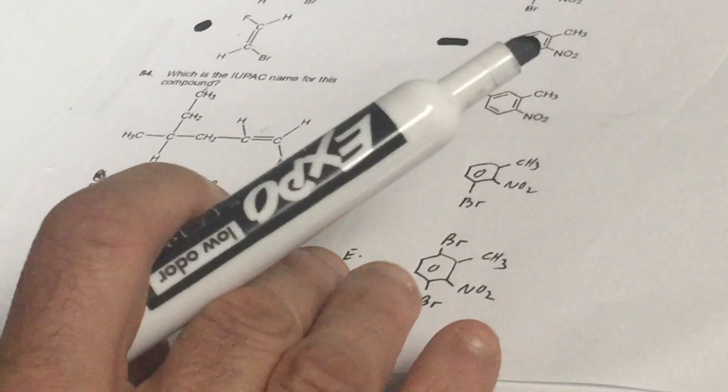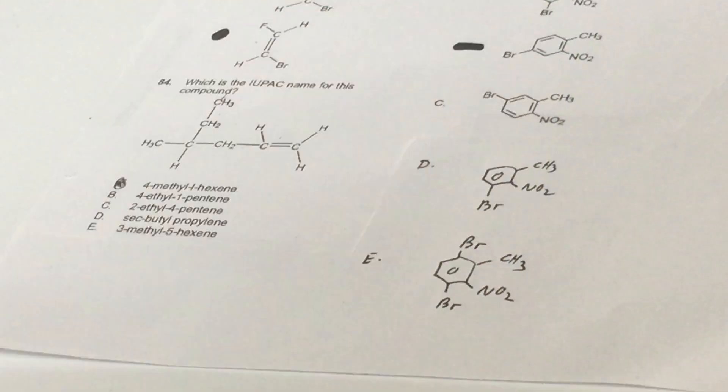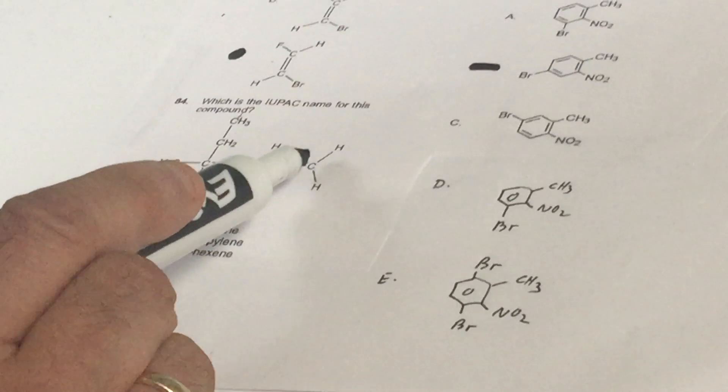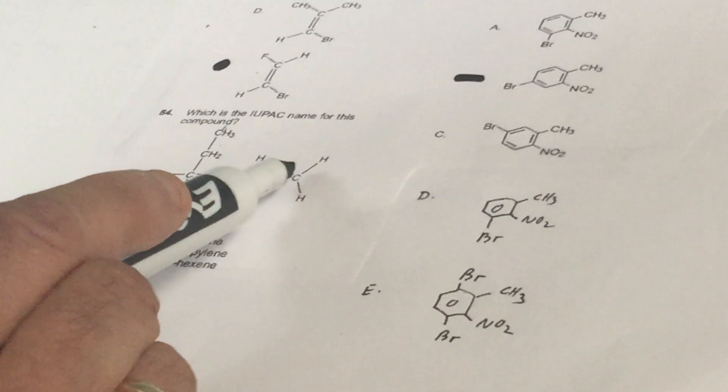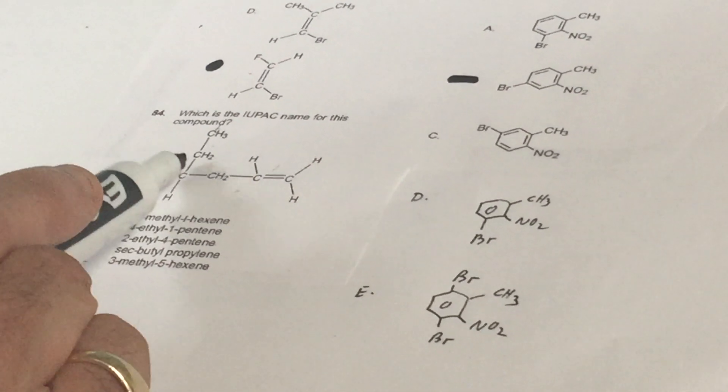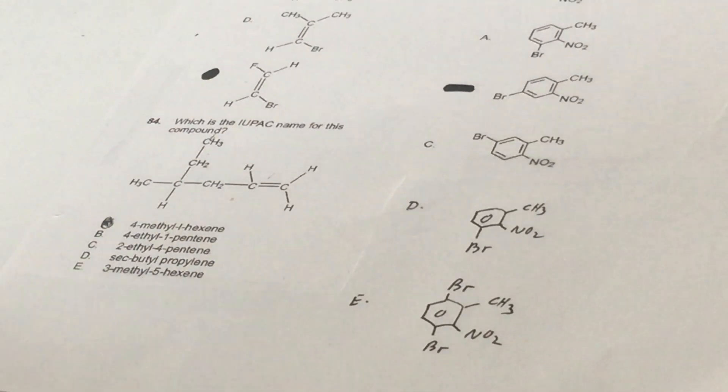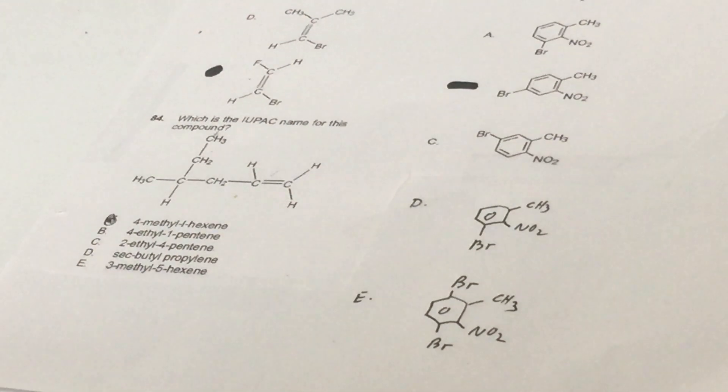Now, the next question on 84, this is a very easy question. They want to know what's the name of this. So all you do is you start on the left side and you pick the longest chain. It's got the double bond. 1, 2, 3, 4, 5, 6. So it would be 4-methyl-1-hexene. That's a real easy question.